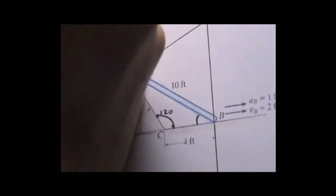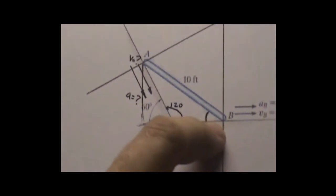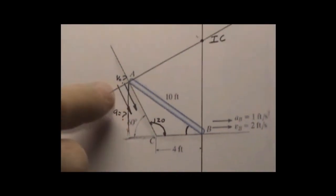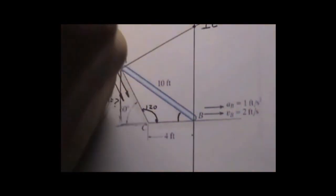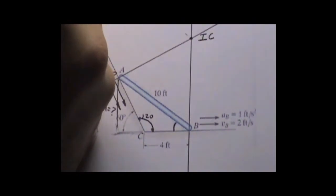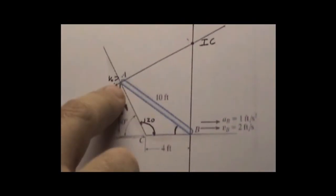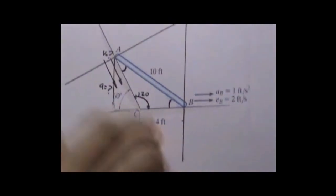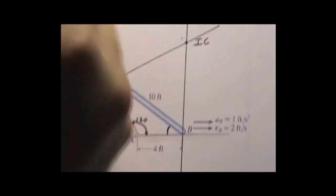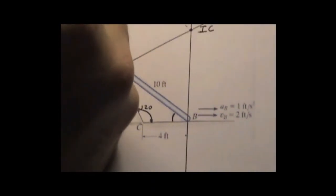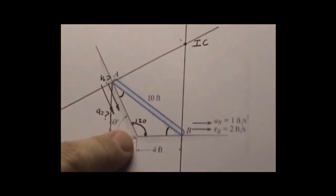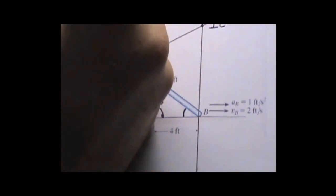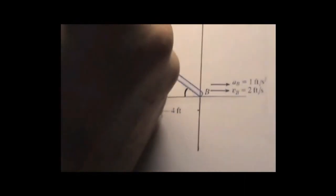That says that sine of this angle B over the other direction, which is this one right here. We don't want to do that, we want to do A. So sine of A, which is this angle right here, over 4, is the side against the angle, equals the sine of 120. You can pick any of them over the opposite, so that's going to be 10.